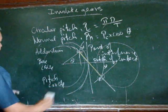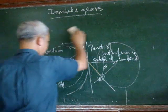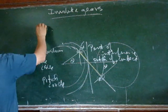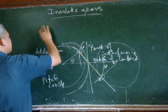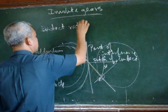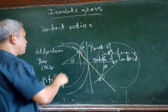With involute gears there is such thing as contact ratio. And contact ratio is just equal to the length of the path of contact over normal pitch.